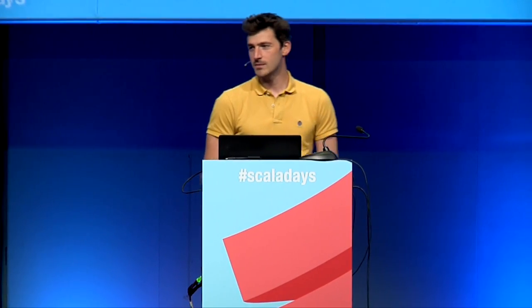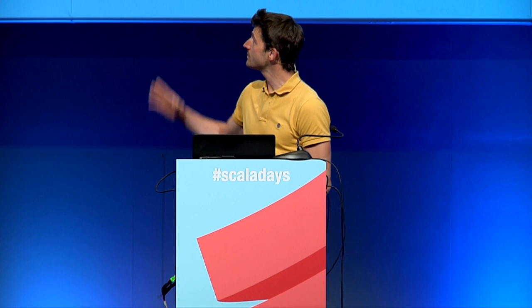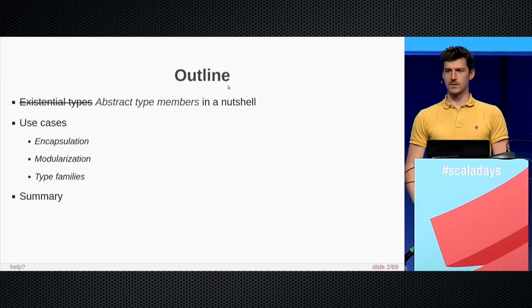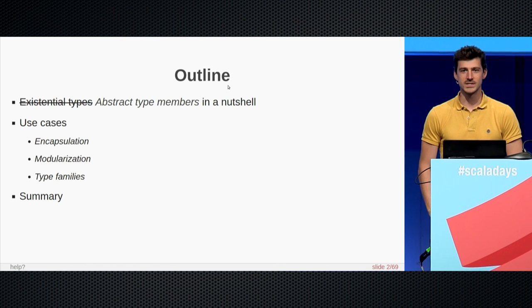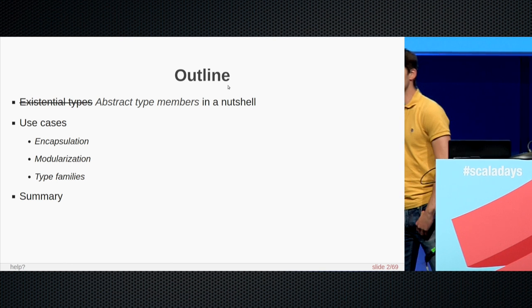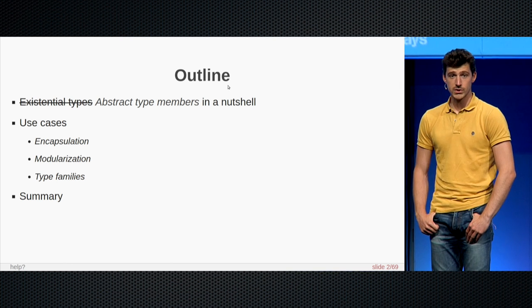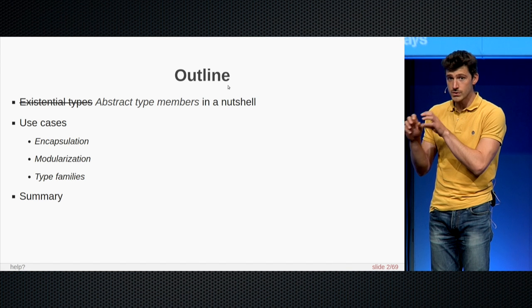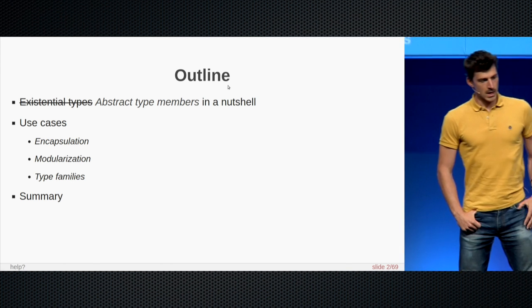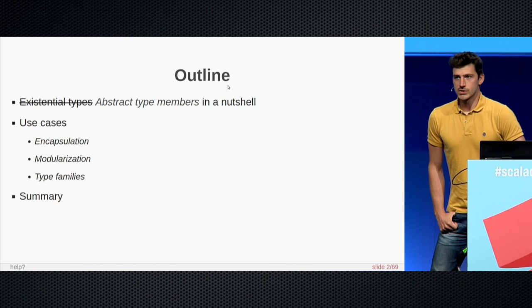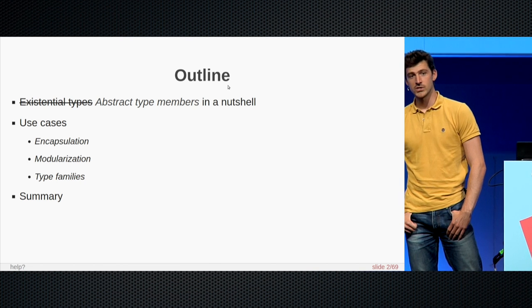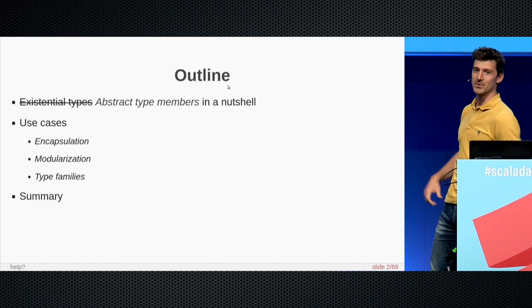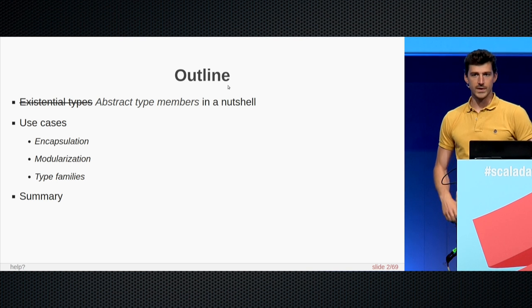Hi, thanks for coming, and welcome to this talk about the exciting subject of existential types. But wait — existential types are going to be removed from Scala, right? That's what Martin Odersky told us yesterday. And that's right, but when we think about existential types in Scala, we think about this 'forsome' keyword that very few people use. Actually, existential types are a more general concept that we can model with abstract type members. So this talk is more about abstract type members and what they are useful for.